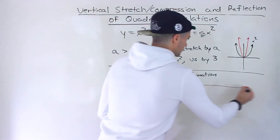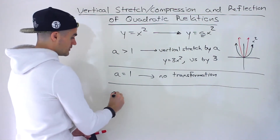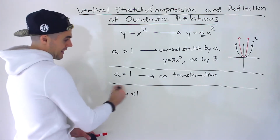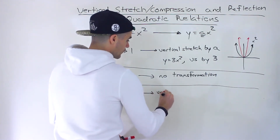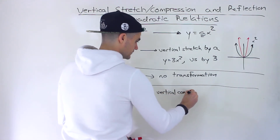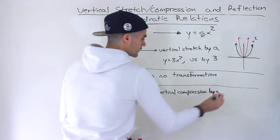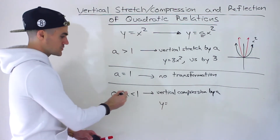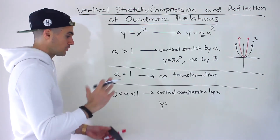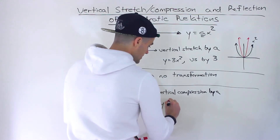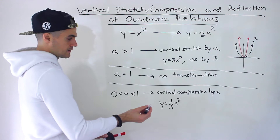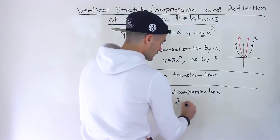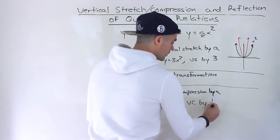The next case is if a is between zero and one. If that happens, then we're going to have a vertical compression by a factor of a. An example of this would be like 0.5x² or 0.2x², and a lot of times they'll be fractions. For example, y equals one-third x squared — if asked to state the transformations undergone on x squared, you would say there's a vertical compression by a factor of one-third.